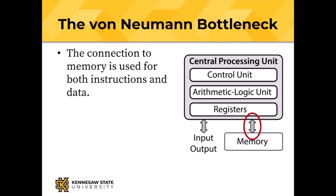Because von Neumann described a computer in which both data and instructions are stored in memory, the connection between the CPU and memory is used for both data and instructions — that's called the von Neumann bottleneck. Sometimes we're loading an instruction and when we're doing that we can't load data, and vice versa. We'll talk about cache memory when we talk about modern computer organization.